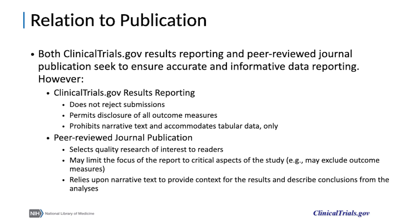Both clinicaltrials.gov and peer-reviewed journal publications seek to ensure accurate and informative results reporting, but they differ in important ways. Clinicaltrials.gov does not reject submissions, while peer-reviewed journals can refuse to publish research not deemed high quality or of interest to readers. Clinicaltrials.gov permits disclosure of all outcome measures assessed, while journals might limit focus to critical aspects, excluding some outcome measures. Clinicaltrials.gov does not permit extensive narrative text — it is intended for tabular, summary-level data only — whereas journal articles rely upon narrative text and conclusive language to provide context and allow interpretation of comparative analyses.